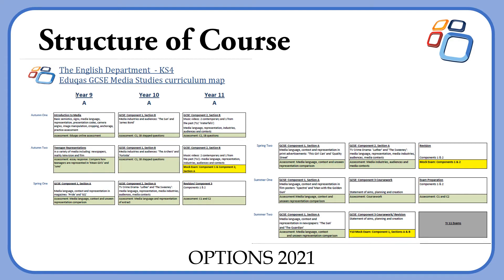In terms of structure of the course, it is split over three years like all other GCSE options at South Nottinghamshire Academy. Year 9 serves as a sort of introductory year where we look at the key skills and key terms that you will need in both Year 10 and Year 11. The first half of that year looks at a range of different texts to help build those key skills and key terms.